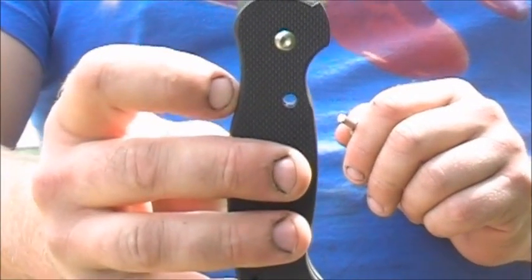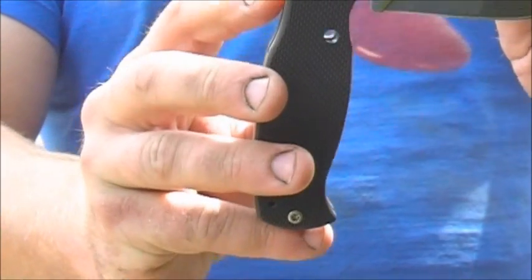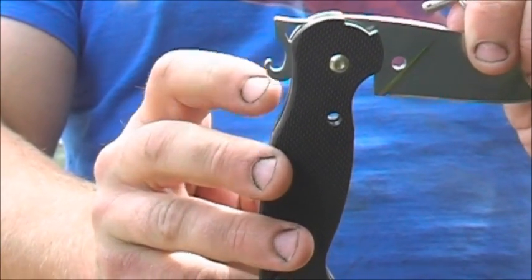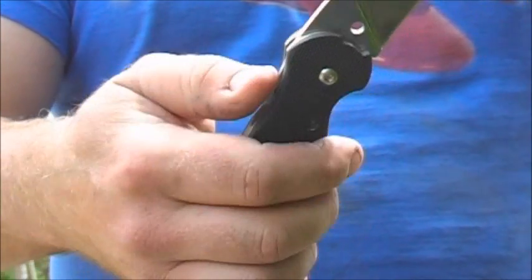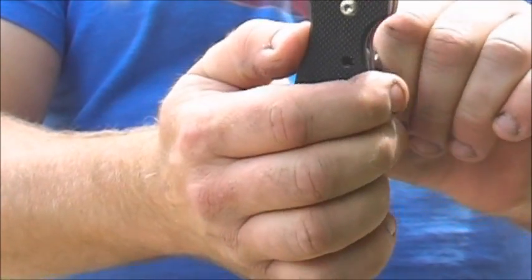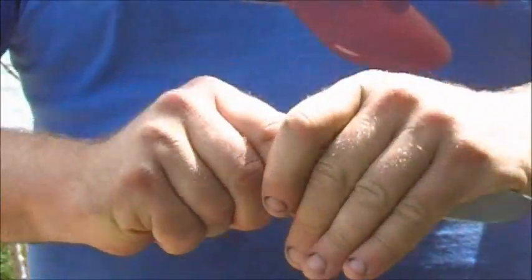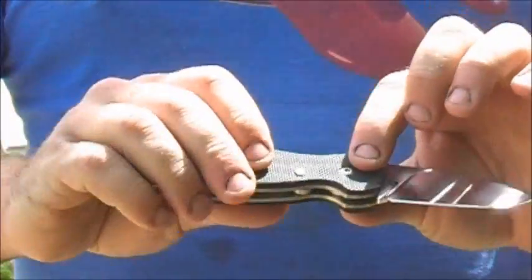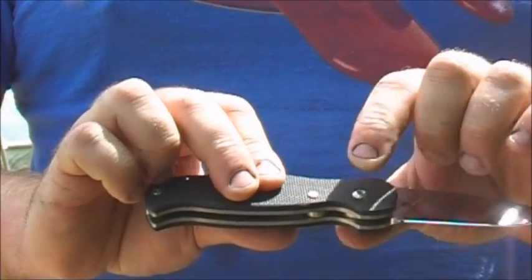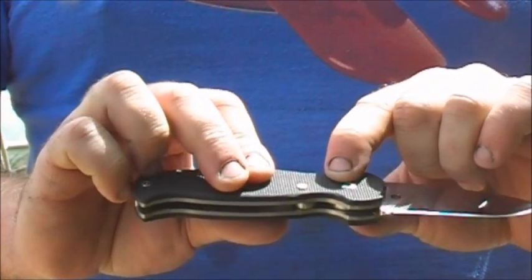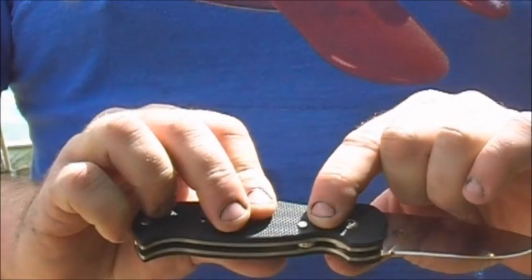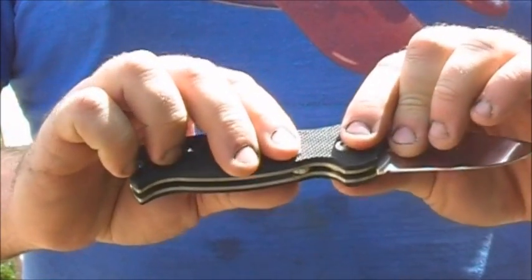The hook on the bottle opener swings round and that becomes the second locking position. Now there's absolutely no way you're going to fold that. We've got a quarter inch hardened steel pivot pin, a four mil stop pin, and now we've got a five mil stainless steel locking pin.